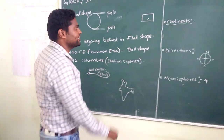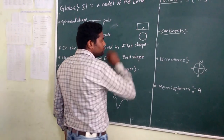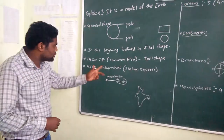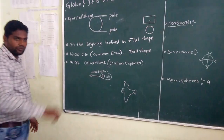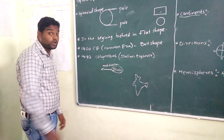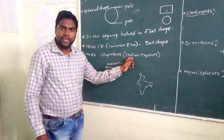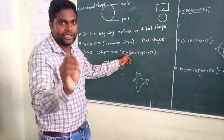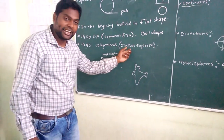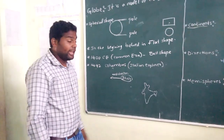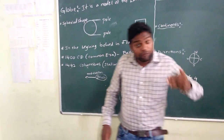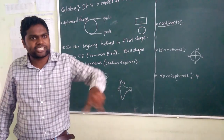Later everyone believed that earth is in the shape of a ball shape. Previously everyone believed earth was flat, but later everyone believed earth is in the shape of a ball. And if you see, in the year 1492, Christopher Columbus — he is from Italy, a country in the European continent.